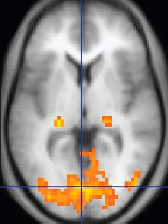To perform a study, the person is positioned within an MRI scanner that forms a strong magnetic field around the area to be imaged. In most medical applications, protons in tissues containing water molecules create a signal that is processed to form an image of the body. First, energy from an oscillating magnetic field is temporarily applied to the patient at the appropriate resonance frequency. The excited hydrogen atoms emit a radio frequency signal, which is measured by a receiving coil. The radio signal may be made to encode position information by varying the main magnetic field using gradient coils. As these coils are rapidly switched on and off, they create the characteristic repetitive noise of an MRI scan.